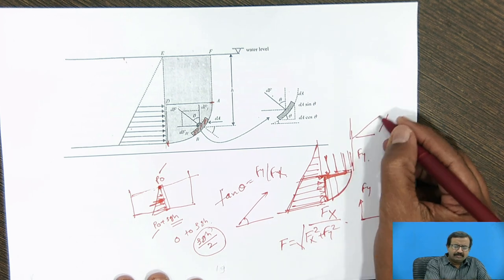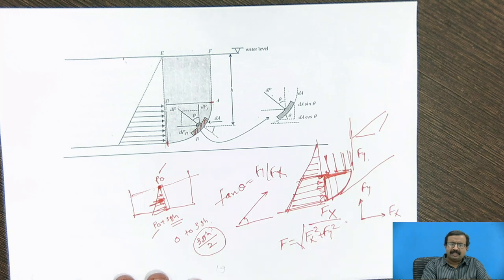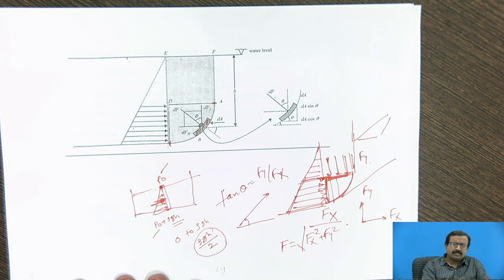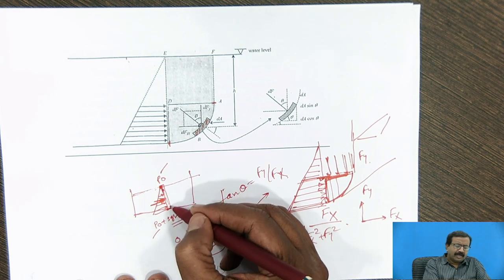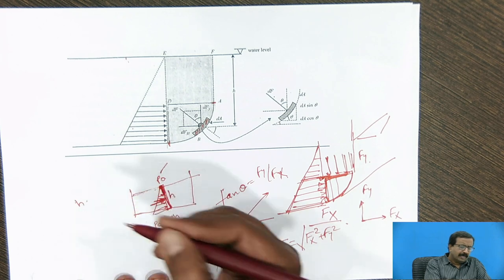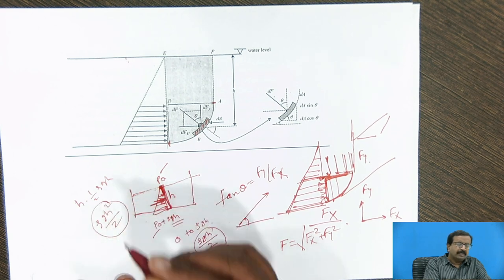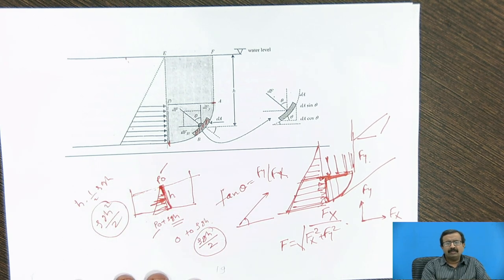Setting aside the width in the other direction covered in modal course assignments, the pressure at the top is 0 and at the bottom at height h is ρgh. Pressure increases from 0 to ρgh, and the total pressure force is the area of the triangle: ½ × base × height = ½ × h × ρgh = ρgh²/2. This is the expression used in calculations.